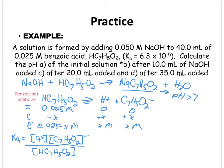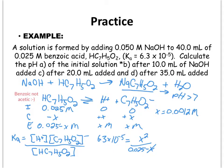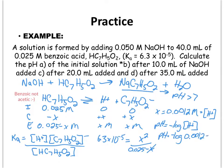In the problem, the Ka is given as 6.3 × 10⁻⁵. Plugging in our ICE table values, it's going to be X squared over (0.025 − X) for the reactant concentration. We can use the approximation, and when we solve for X we get X = 0.0012 molar. From our ICE table, X is actually the concentration of H⁺, so pH = −log(0.0012) = 2.92.